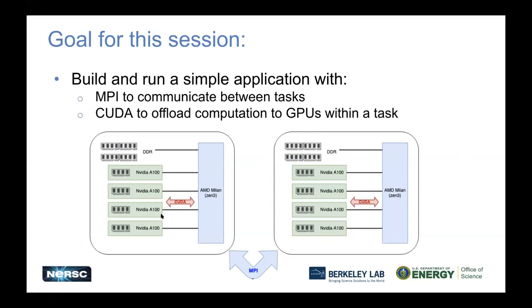Here's a block diagram of what a couple of nodes of Perlmutter looks like. We have our AMD Zen3 CPU connected to four NVIDIA Ampere GPUs, a bunch of RAM on the CPU, and a bunch of RAM within the GPUs. We use CUDA to move data and kernels between the CPU and the GPUs, and we use MPI to pass data around between the nodes.